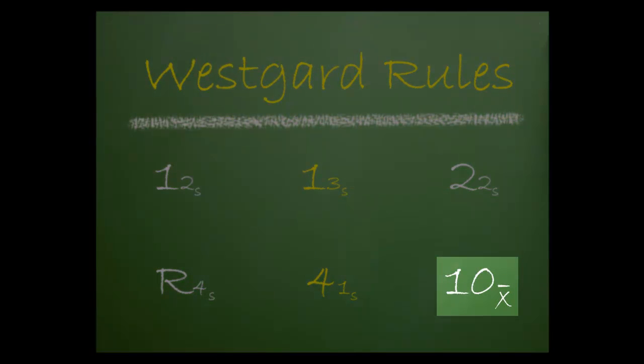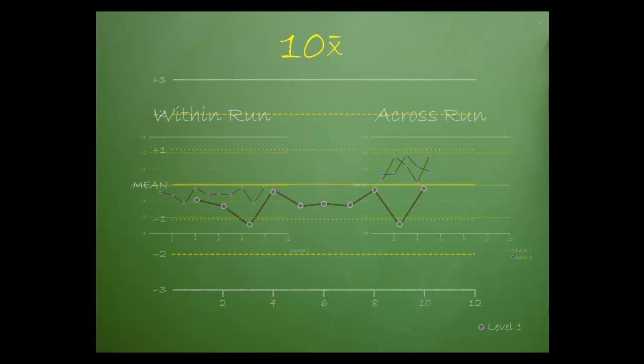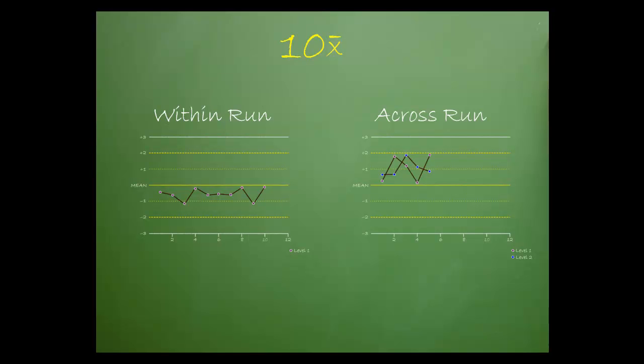The final rule is 10x. The 10x rule is violated when there are a total of 10 control points on either side of the mean, regardless of the standard deviation. If only one level of control is involved, the rule is violated within a run. If more than one level of control is involved, the rule is violated across a run.